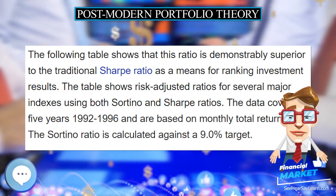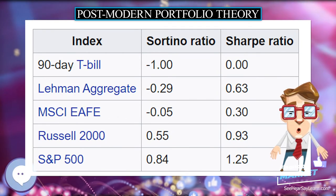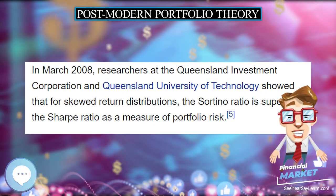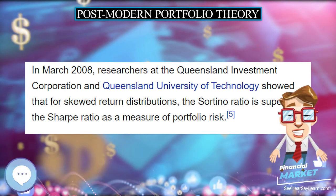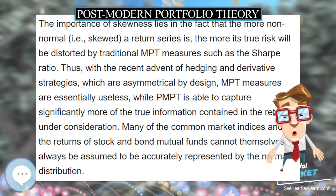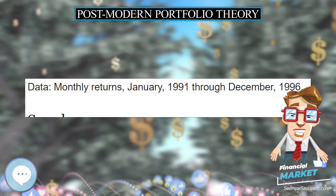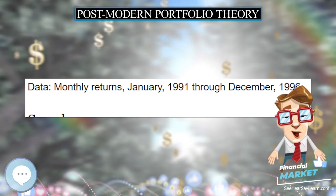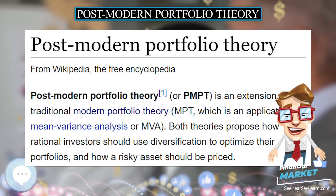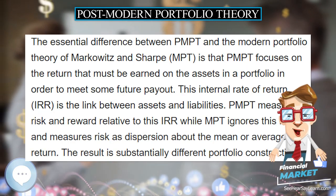The Sortino Ratio is calculated against a 9.0% target. As an example of the different conclusions that can be drawn using these two ratios, notice how the Lehman Aggregate and MSCI EAFE compare: Lehman ranks higher using the Sharpe Ratio, whereas EAFE ranks higher using the Sortino Ratio. In many cases, manager or index rankings will be different depending on the risk-adjusted measure used. These patterns will change again for different values of T. For example, when T is close to the risk-free rate, the Sortino Ratio for T-bills will be higher than that for the S&P 500, while the Sharpe Ratio remains unchanged. In March 2008, researchers at the Queensland Investment Corporation and Queensland University of Technology showed that for skewed return distributions, the Sortino Ratio is superior to the Sharpe Ratio as a measure of portfolio risk.